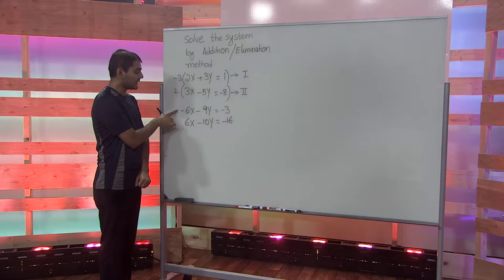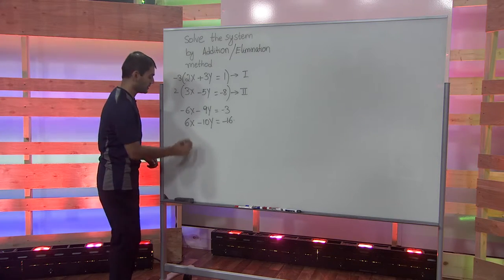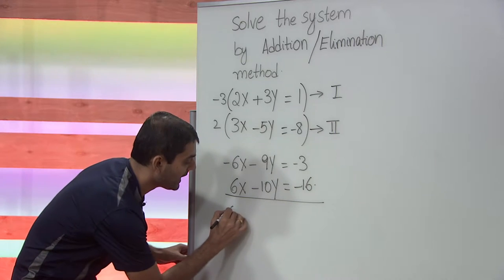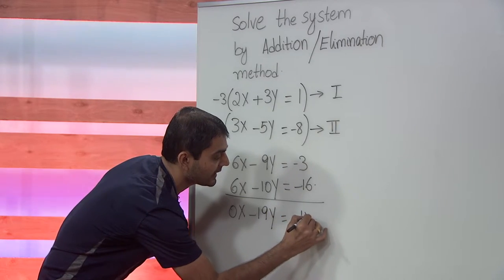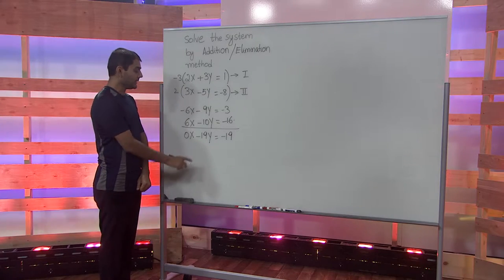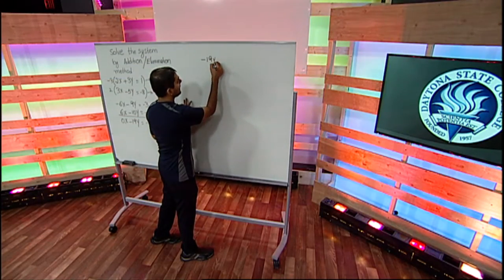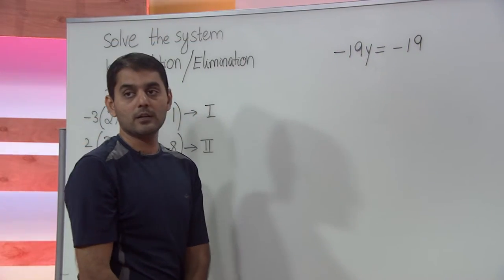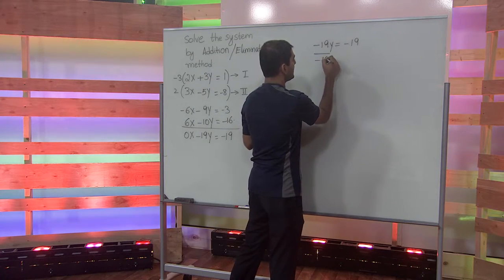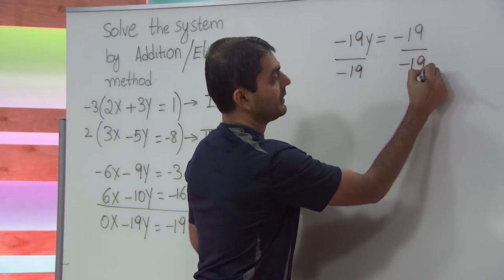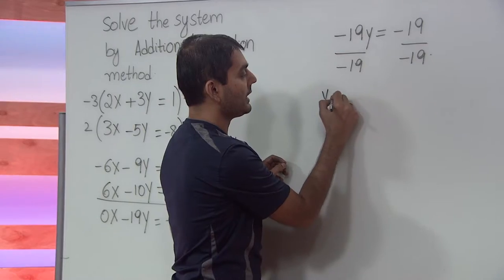We can now see that the coefficients of the variable x are opposite. Hence, we add these two equations. When we add them, we get 0x minus 19y equals negative 19. Combining the terms on the left-hand side, we get negative 19y equals negative 19. To find the value of y, we divide both sides by negative 19, giving us y equals 1.